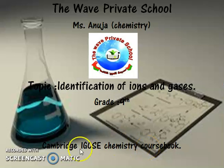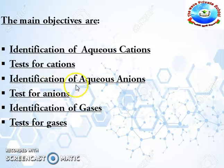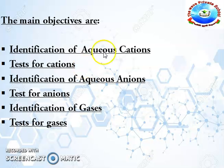Let us proceed with the chapter. The main objectives are: identification of aqueous cations, test for cations, identification of aqueous anions, test for anions, and identification of gases, then test for gases. Students, cations means positive ions and anions means negative ions. Let us proceed next.